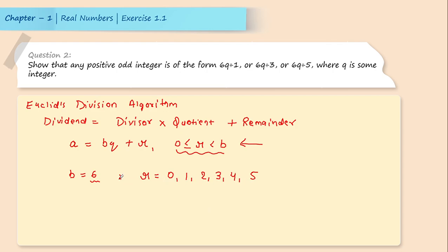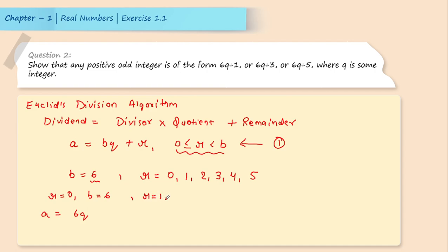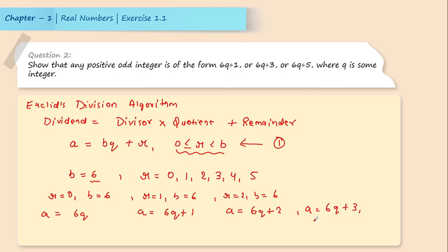Now we substitute each value of r into equation 1, with b = 6 each time. When r = 0: a = 6q. When r = 1: a = 6q + 1. When r = 2: a = 6q + 2. When r = 3: a = 6q + 3. When r = 4: a = 6q + 4. When r = 5: a = 6q + 5.